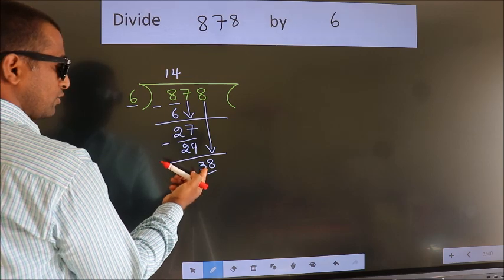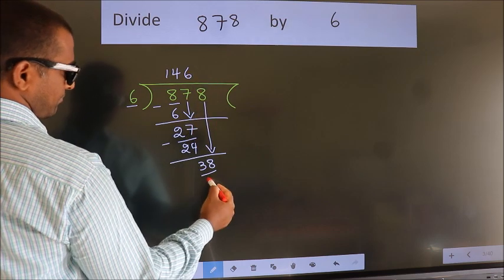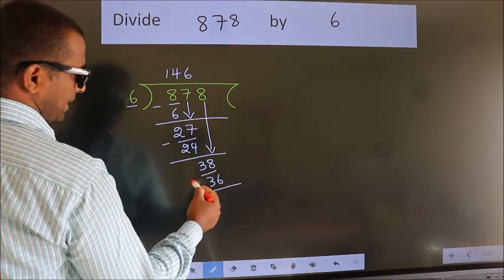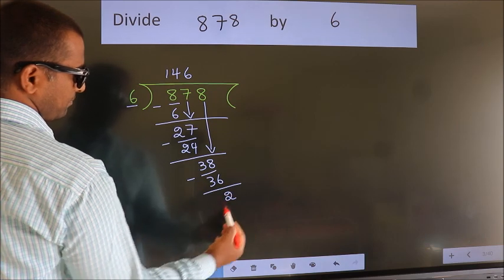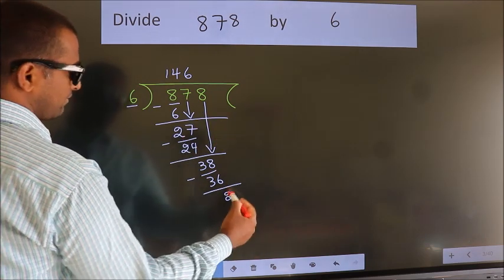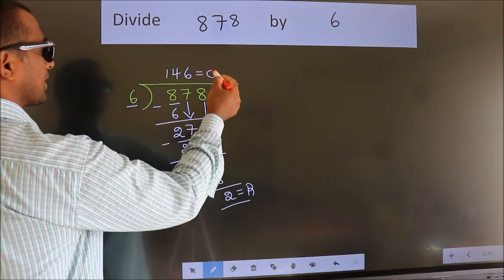A number close to 38 in the 6 table is 6 times 6, which is 36. Now we subtract and get 2. No more numbers to bring down, so we stop here. This is our remainder. This is our quotient.